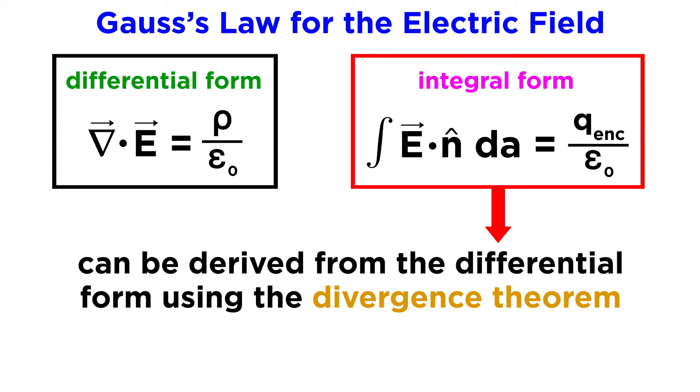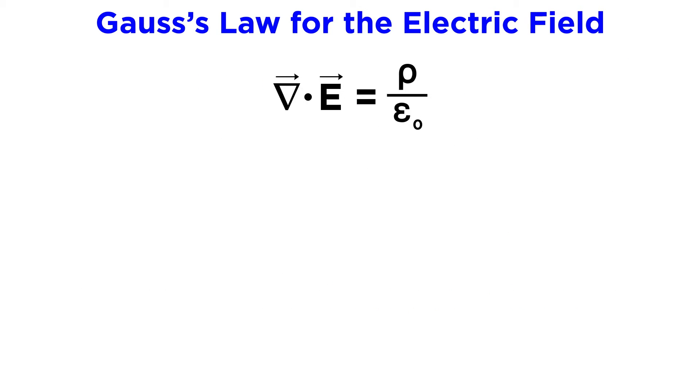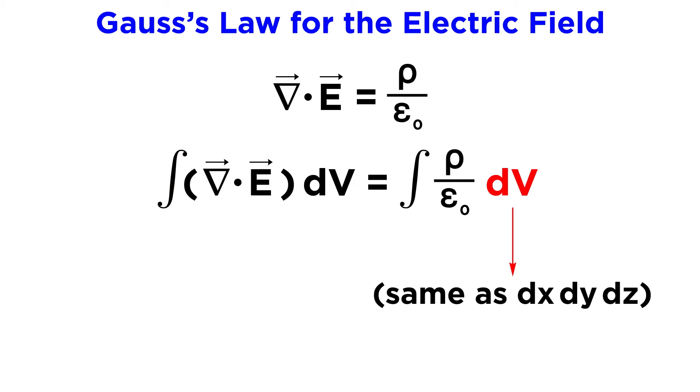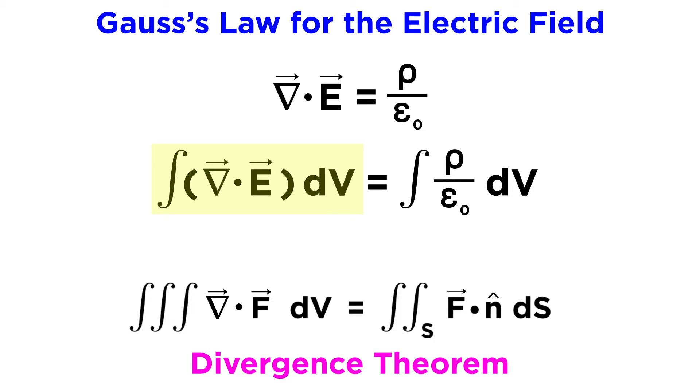The integral form can be derived directly from the differential form by applying the divergence theorem, which we went over in one of the mathematics tutorials. Let's quickly run through the derivation together. First we will take the differential form and integrate both sides with respect to dv, which is the differential volume, essentially the same as dx dy dz in Cartesian space. Now, the left side of this equation resembles one side of the divergence theorem. This theorem says that the triple integral of the divergence of a vector field, which is what is represented here given the del operator and the fact that we are integrating with respect to dv, is equal to this surface integral.